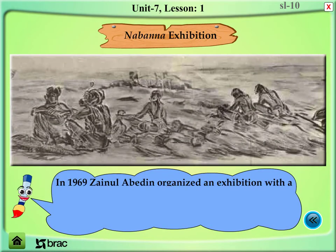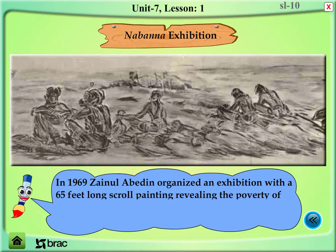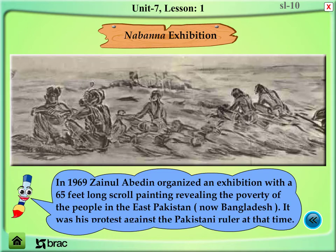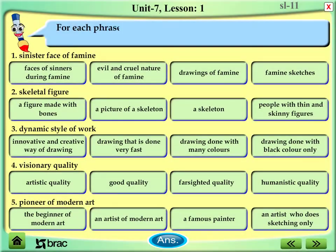Naubanno Exhibition: In 1969, Zainul Abidin organized an exhibition featuring a 65-feet-long scroll painting revealing the poverty of the people in East Pakistan, now Bangladesh. It was his protest against the Pakistani ruler at that time.